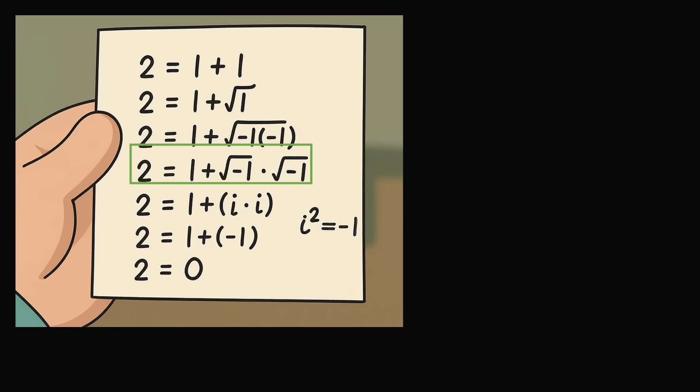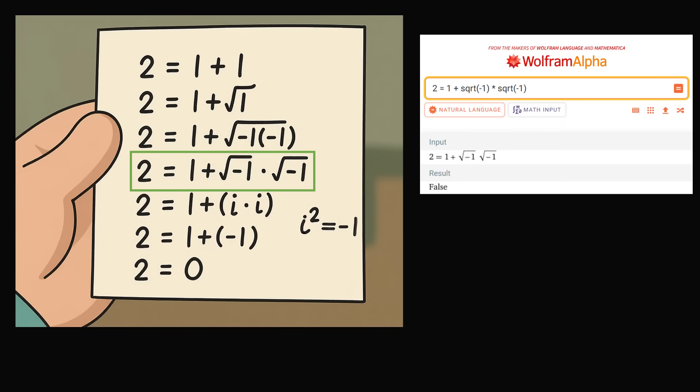Let's now go to the fourth line. When we input this into Wolfram Alpha, we see this is where all the trouble begins. This is not a true equation. So something has gone wrong from the third line to the fourth line.